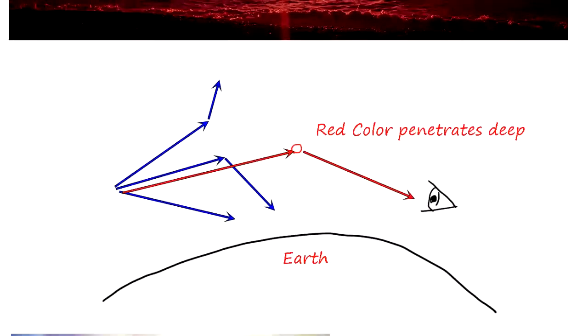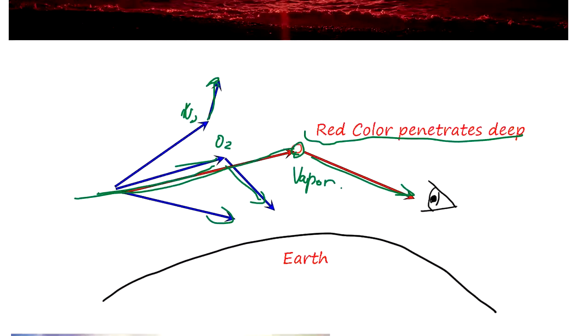So this is the illustration. The O2, N2, this guy all scattered away, and only one comes to the visible range. It's red color, penetrates deep, and hits vapor. So you see the lights reflecting back from the vapor is what you see. That's the red color.